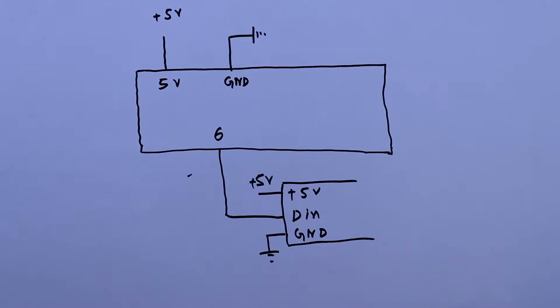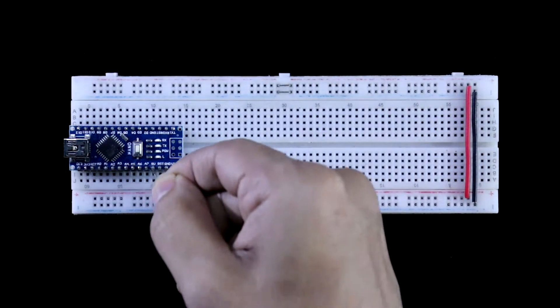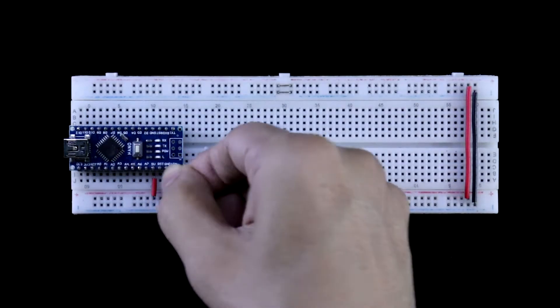Now we will see this in practice. Here is our Arduino Nano. 5 volt pin is connected to the positive rail and ground is connected to the negative rail.